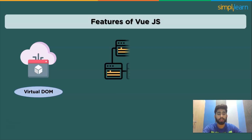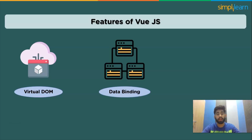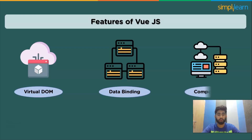The second feature is data binding. With the help of binding directives called v-bind, which comes with Vue.js, data binding facilitates manipulating or assigning values to HTML attributes, changing styles, and assigning classes. The next feature is components — one of Vue.js's key features. Components enable the creation of unique elements that can be reused throughout HTML.